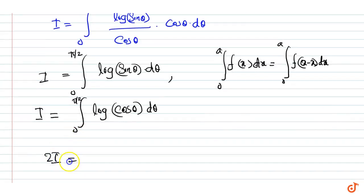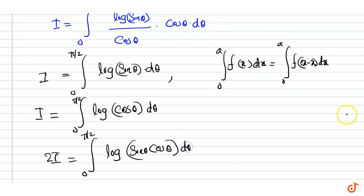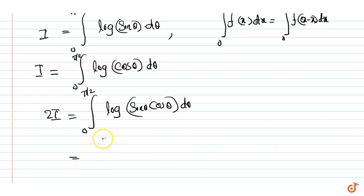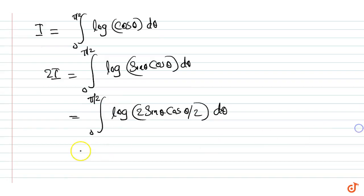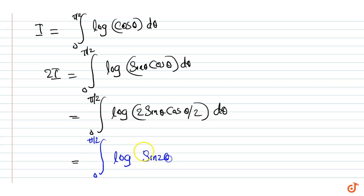Now adding these two equations, we get 2I equal to integral from 0 to pi by 2 of log(sin theta cos theta) d theta, which equals integral from 0 to pi by 2 of log(2 sin theta cos theta divided by 2) d theta. This equals integral from 0 to pi by 2 of log(sin 2 theta) minus log 2, d theta.